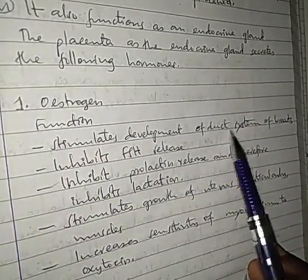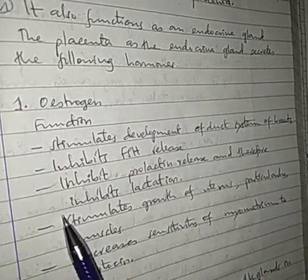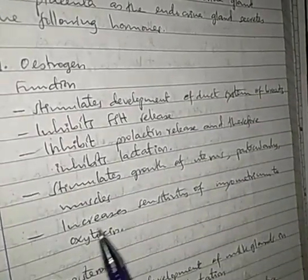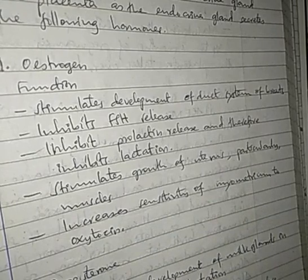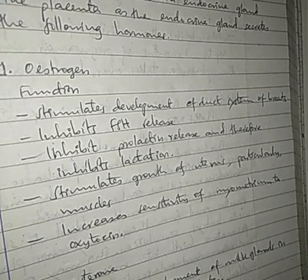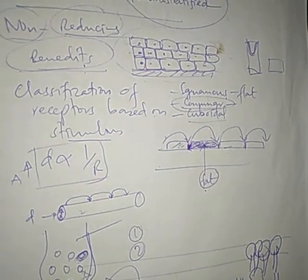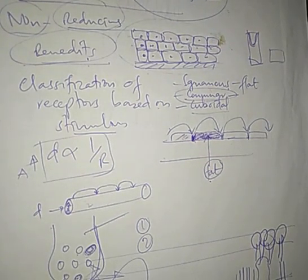Estrogen stimulates development of the duct system of the breasts, inhibits follicle stimulating hormone, inhibits prolactin and therefore inhibits lactation, stimulates growth of the uterus particularly its muscles, and increases sensitivity of the myometrium to oxytocin. For the sake of time I cannot explain all of these in detail now, but I will upload production lecture videos later.